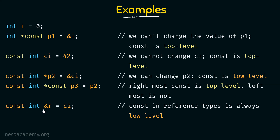Here we have const int &r = ci — this is a reference to const, a const integer reference bound to ci. As we said, const in reference types is always low-level. So keep in mind that whenever you see a constant appearing for a reference type, it will always be low-level. Only in case of pointers can we independently have top-level and low-level. Even other types can have top-level constants, but in case of references, the constants are always low-level.